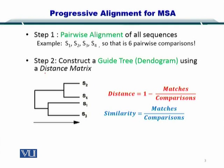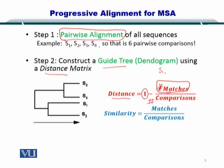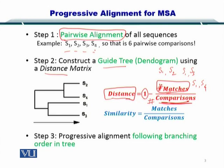To compute the distance matrix: distance equals 1 minus the number of matches over the number of comparisons. Since you have already performed pairwise alignment, you already know how many matches exist between S1 and S2, S1 and S3, and S1 and S4. So since you know the number of matches as well as the number of comparisons, you can easily compute the distance between each pair of sequences. Now you want to move to the third step — creating a branching order to represent the distances.